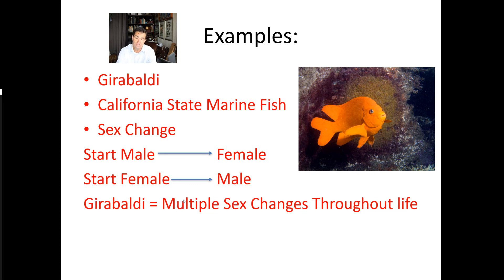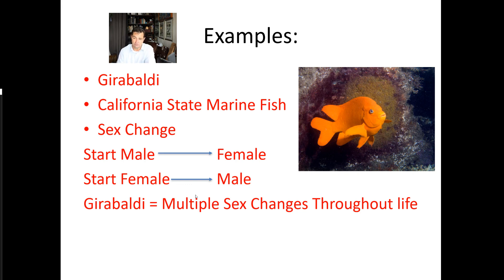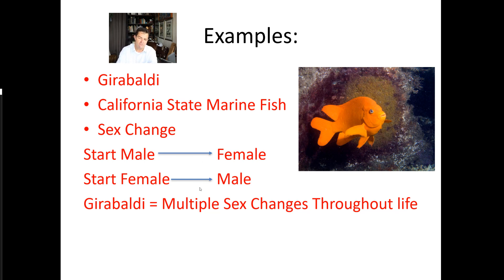Some fish start as male and later become female; others start female and turn male. The Garibaldi is particularly interesting because it undergoes multiple sex changes throughout its life — back and forth between male and female — rather than sequential hermaphroditism, which is a one-directional change from one sex to the other. Quite a few groups of fish do this, not just one or two species.